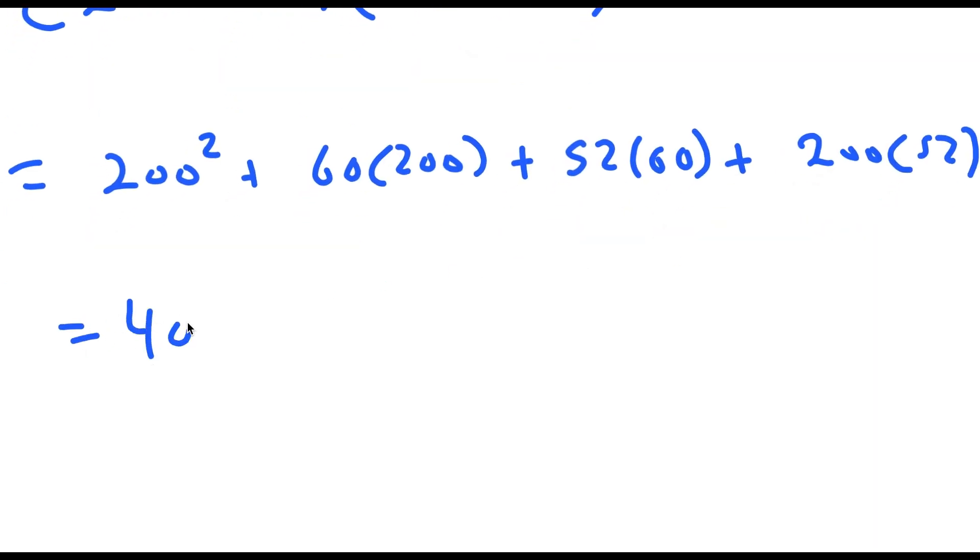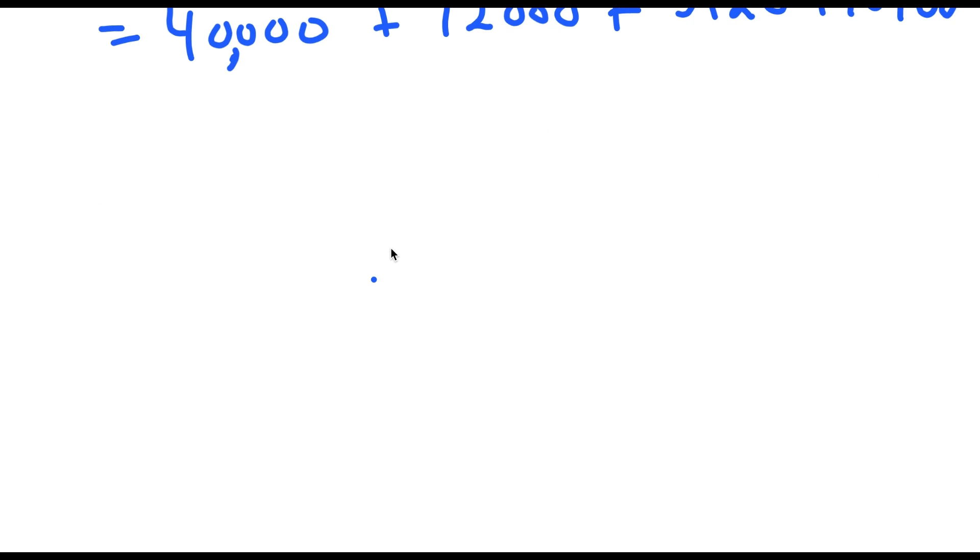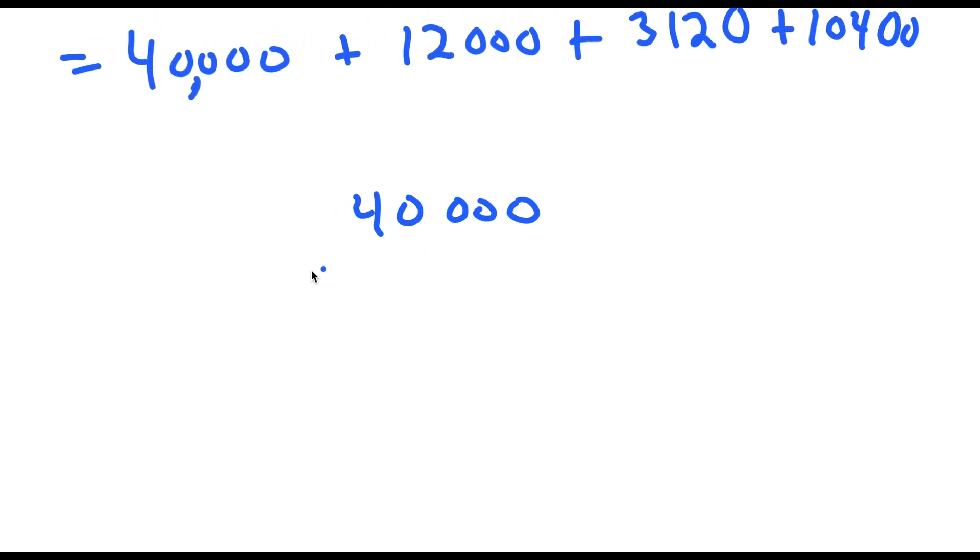And this is equal to 40,000 plus 12,000 plus 3,120 plus 10,400. And now let me actually add these all up: 40,000 plus 12,000 plus 10,400 plus 3,120.